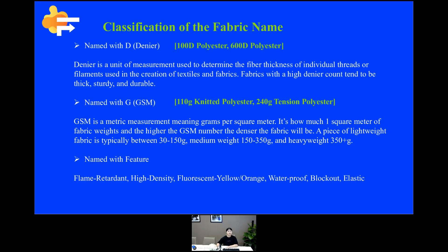The second type is named with G, for GSM. GSM is a metric measurement meaning grams per square meter — it's how much one square meter of fabric weighs. The higher the GSM number, the denser the fabric will be. Lightweight fabric is typically between 30 to 150 grams, medium weight is about 150 to 350 grams, and heavy weight is heavier than 350 grams. For example, 110 grams knitted polyester is a lightweight fabric for standard use, while 240 grams tension fabric is a medium weight fabric for longer-term use.